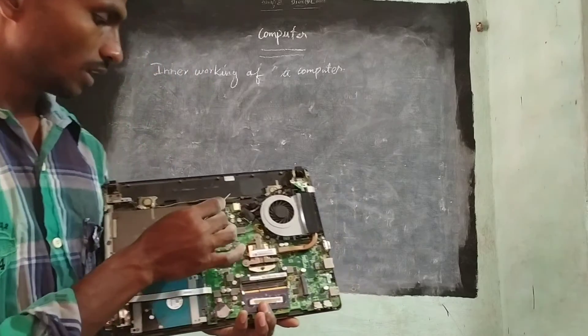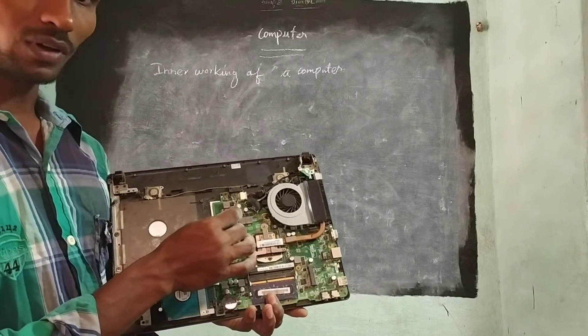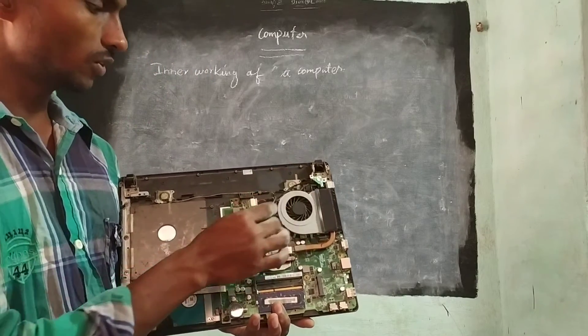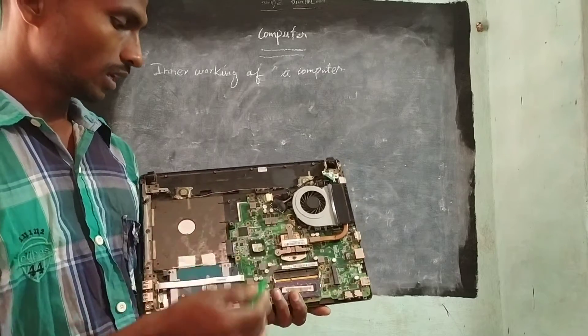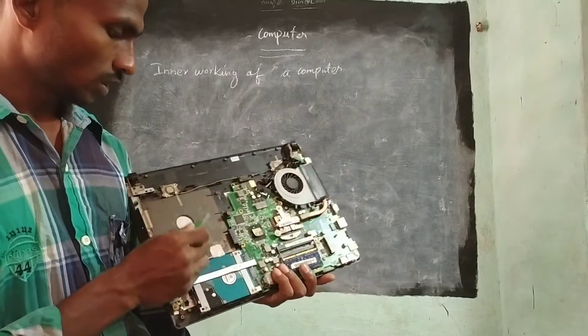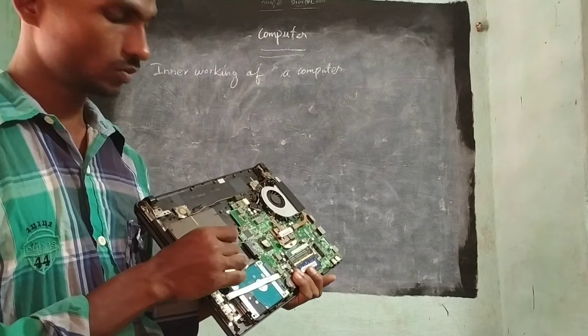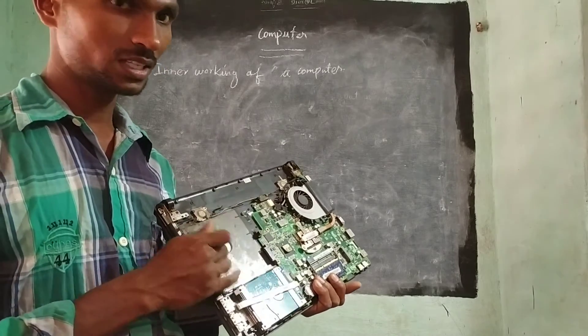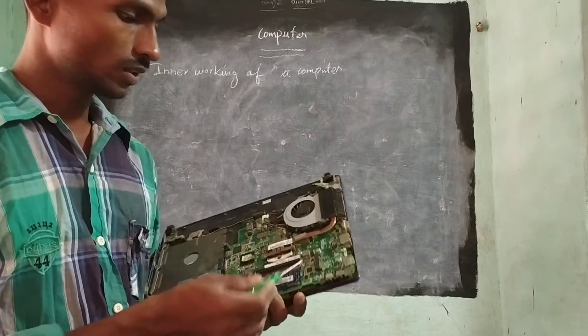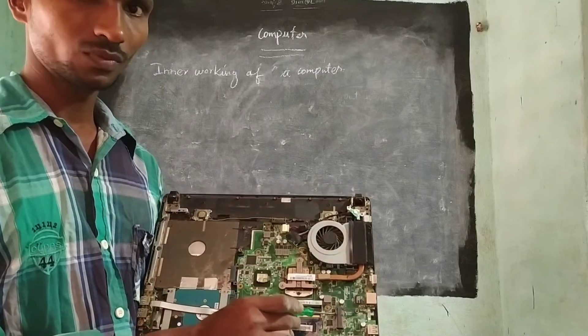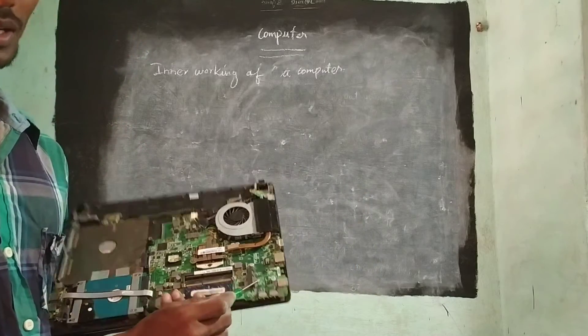Next, here only it is the Power cable. Through this cable only we will get the power. Next, this port is for the CD ROM. So this place is for the CD ROM. Next, this is the multiprocessor. This is the multiprocessor.